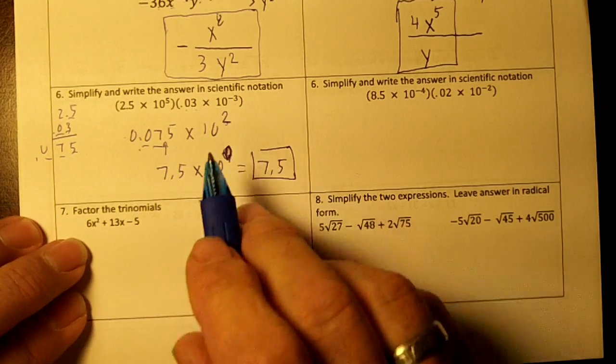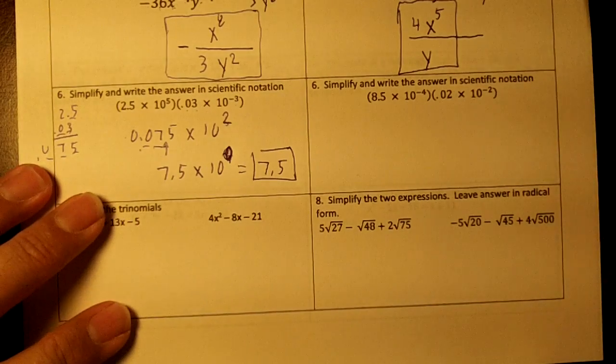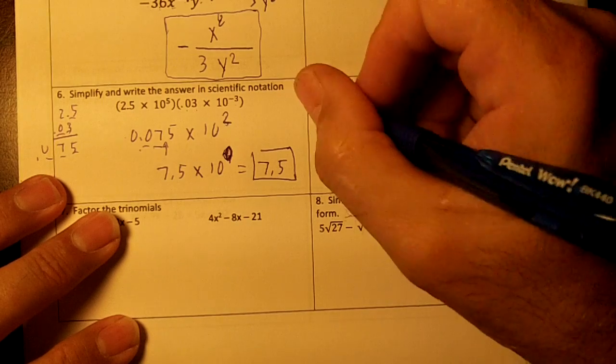Because I moved the decimal twice, so it takes it over here. Okay, now then let's go to this one. 8.5 times 0.02.